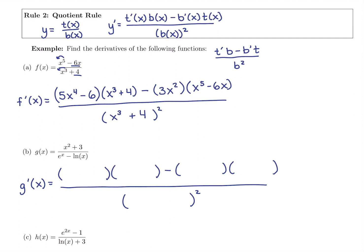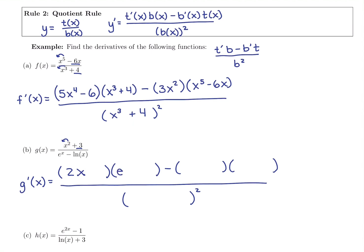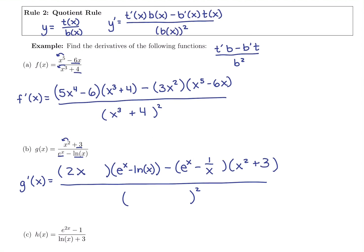Fill it out piece by piece, working from top to bottom. First, the derivative of the top: derivative of x² is 2x, derivative of 3 is 0 — it's a constant — so the derivative of the top is just 2x. The original bottom is (eˣ - ln x). Minus the derivative of the bottom: derivative of eˣ is eˣ, and the derivative of ln x — rule 9 — is 1/x. Now multiply by the original top, (x² + 3), all over the original denominator squared.